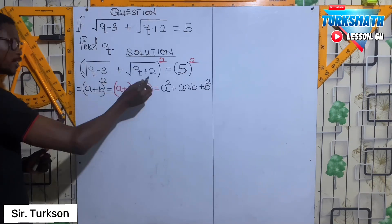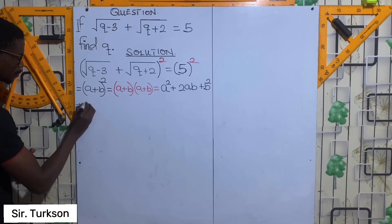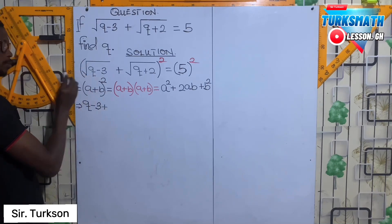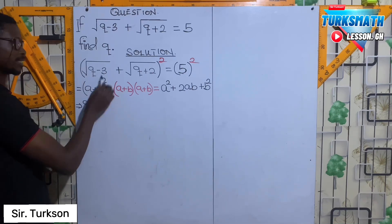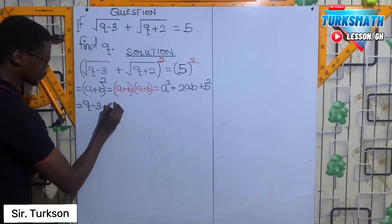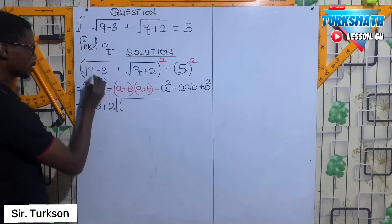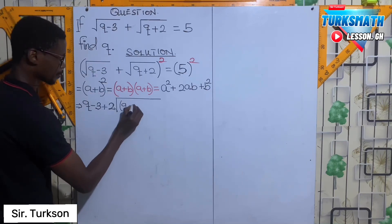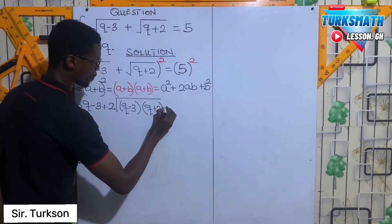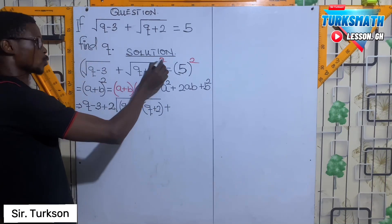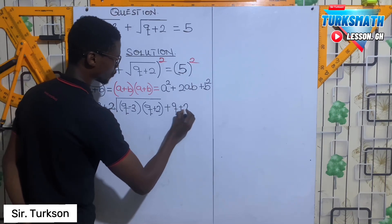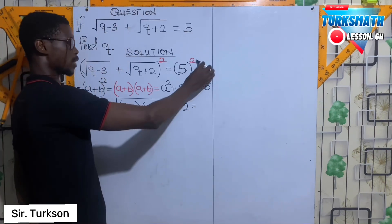The square root of Q minus 3 squared will give us Q minus 3, plus the root of Q minus 3 times root of Q plus 2 times 2 — we are multiplying — and the root of Q plus 2 squared will give us Q plus 2, and this equals 5 squared, which gives us 25.